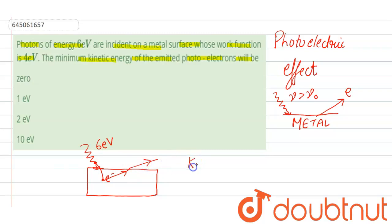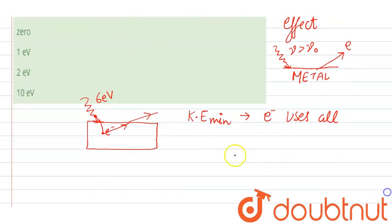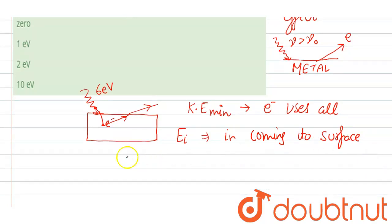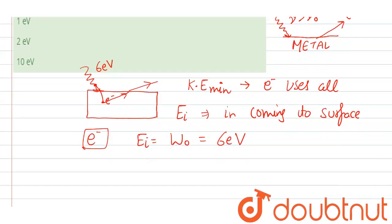This question is asking about the minimum kinetic energy. The minimum kinetic energy is developed when the electron uses all the energy of the incident radiation just to reach the surface. For that particular electron, the energy of incident radiation equals the work function, which is 4 electron volts, and the minimum kinetic energy equals EI minus W₀.